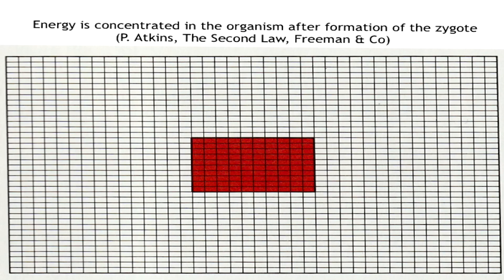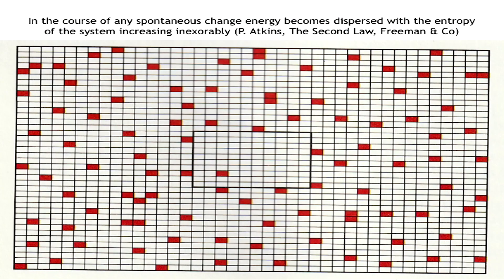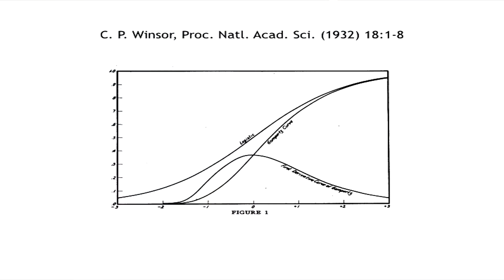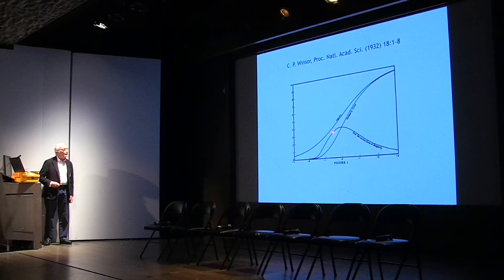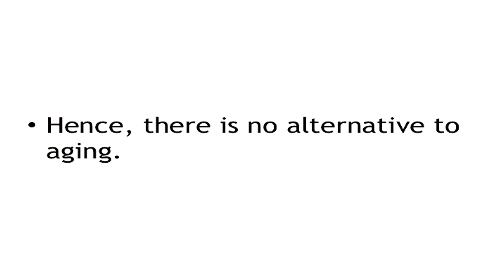One can imagine that energy is concentrated in the organism after formation of the zygote, but during progression through age and with each reorganization, energy becomes dispersed, with the entropy of the system increasing inexorably to a limit. This explains the flattening of the mortality curve in a human population, because of this progressive increase in entropy with a decrease in free energy available. Hence, there is no alternative to aging. Thank you.